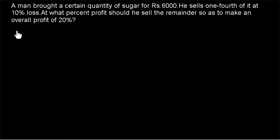Hi students, welcome to today's class. The question for today is: a man bought a certain quantity of sugar for Rs. 6000. He sells one-fourth of it at 10% loss. At what percent profit should he sell the remainder so as to make an overall profit of 20%? So let's analyze the question.